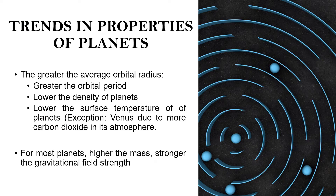There are some trends in the properties of planets. In general, the greater the average orbital radius or orbital distance, the greater the orbital period, as the planet travels slower through a larger distance to complete its orbit. Also, the lower the density of the planets — the inner four planets, Mercury, Venus, Earth, and Mars, are rocky planets so they have almost the same density.